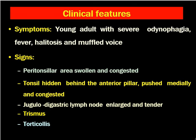Sometimes, when it happens in children, there might be torticollis — the children cannot turn the neck towards the opposite side. Peritonsillar abscess is usually a unilateral condition, so the patient has unilateral complaints in the throat.